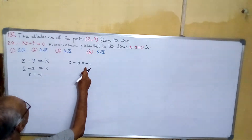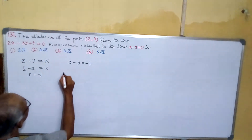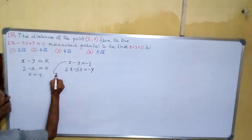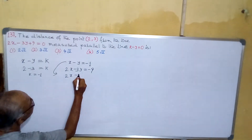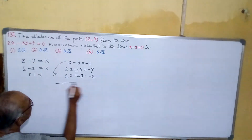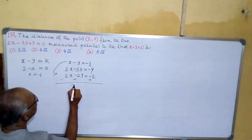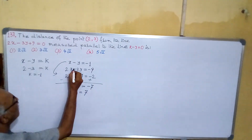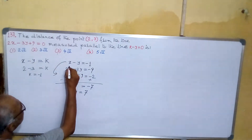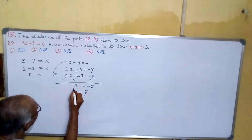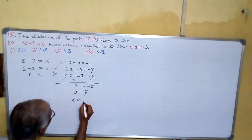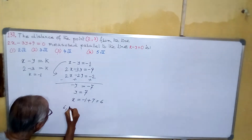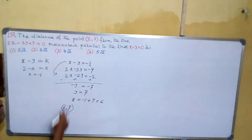Now we find the point of intersection of this line x − y = −1 and the other line 2x − 3y = −9. Multiplying x − y = −1 by 2: 2x − 2y = −2. By subtraction: −y = −7, so y equals to 7. Wait, that gives −y = −7, so y = 7. Putting y = 7 back: x = −1 + 7, so x equals to 6. The intersection point is (6, 7).